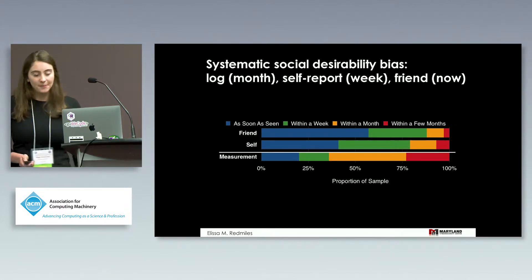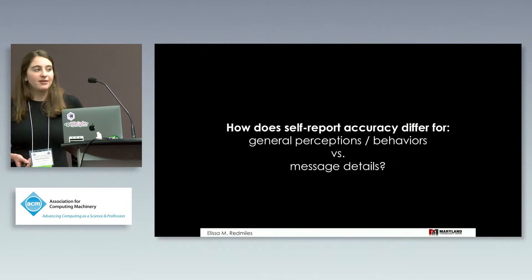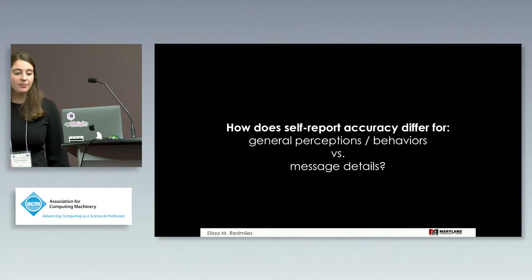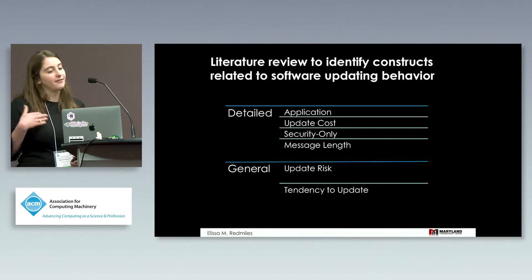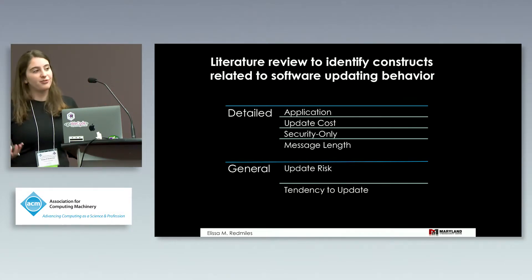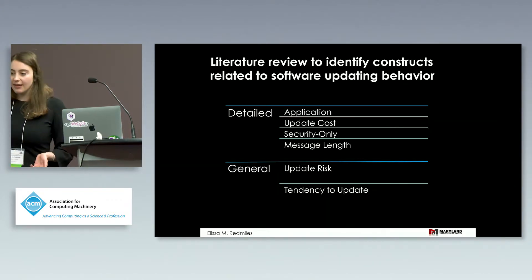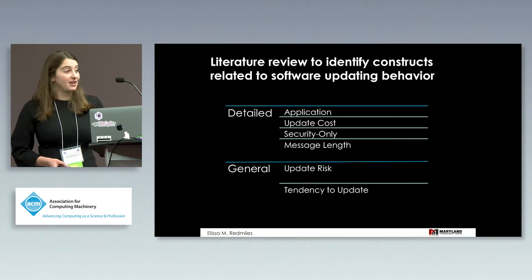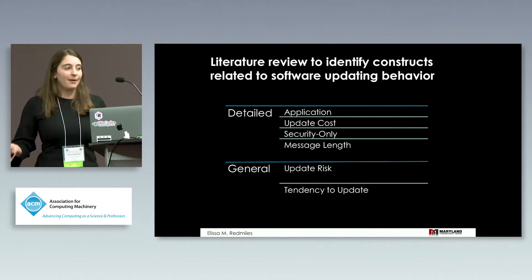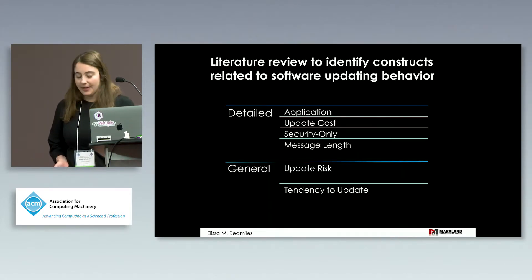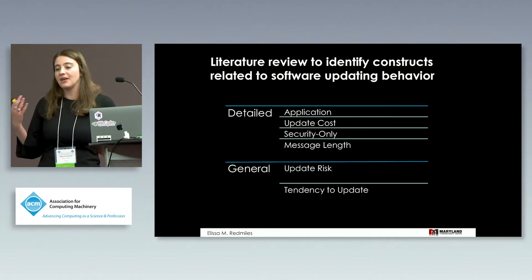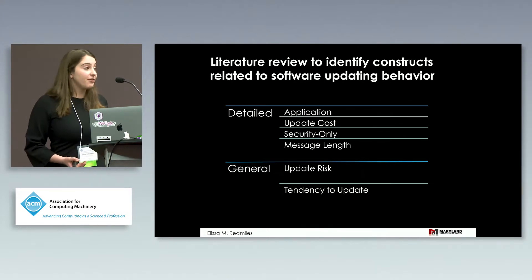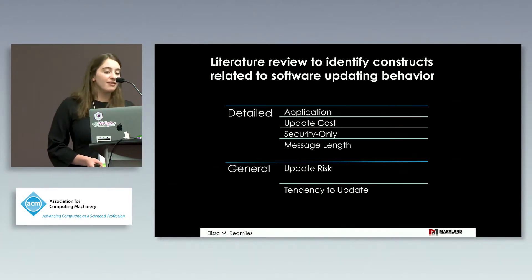In addition to asking about frequency of behavior, we wanted to know about why people update and whether answers from log data would match survey data. From our literature review, we identified both detailed or message-specific factors and general factors. Detailed factors included: what application is this, what's the cost of doing the update, do I have to restart, does it take 30 minutes, is it just about security or am I also getting features or stability improvements, and how long is the message. More general perception factors included people's sense of update risk — how often their computer crashes after updates, and whether updates have made things better or worse.